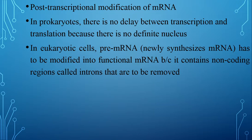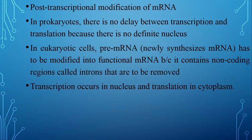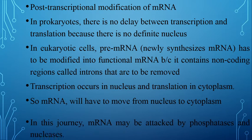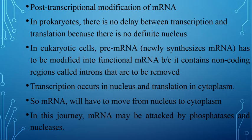The pre-mRNA must be modified because it contains non-coding regions called introns that are to be removed. The first modification is removal of introns. The second reason is that transcription occurs in the nucleus and translation occurs in the cytoplasm, so messenger RNA must move from nucleus to cytoplasm. During this journey, messenger RNA may be attacked by enzymes such as phosphatases and nucleases, so we must protect it from these enzymes.